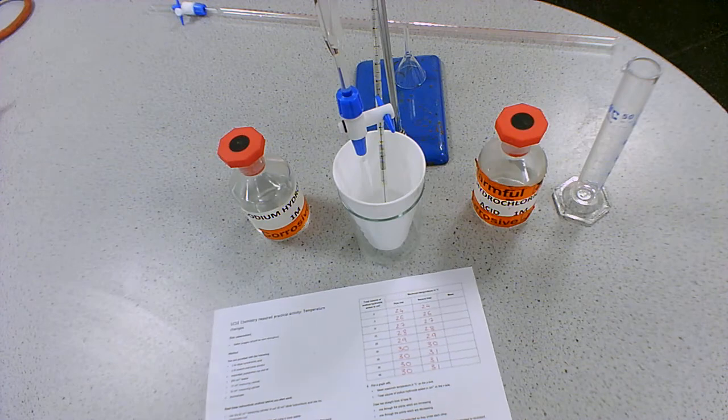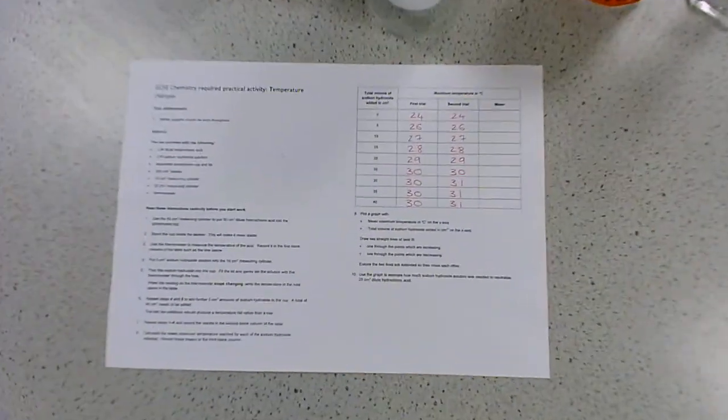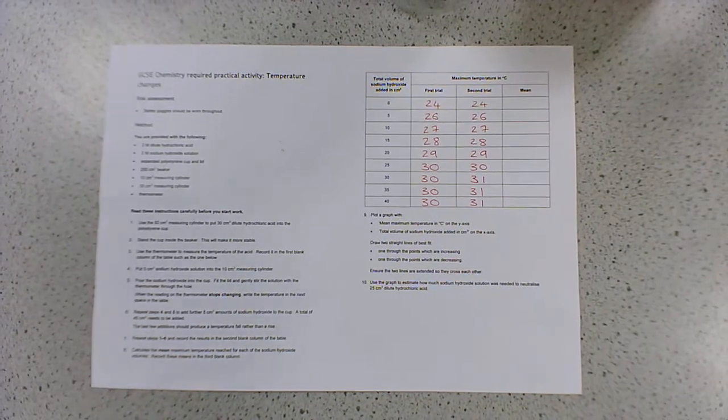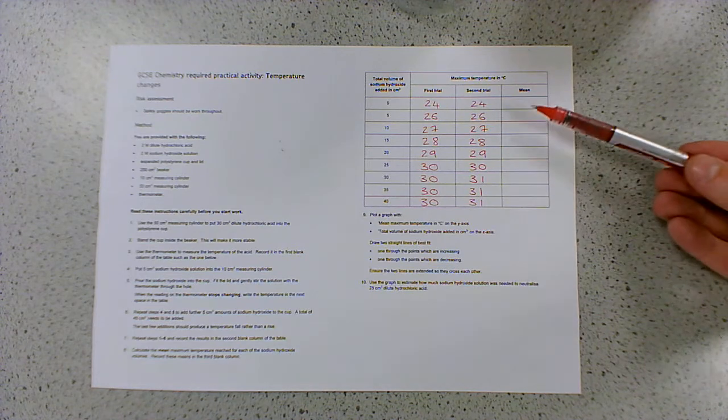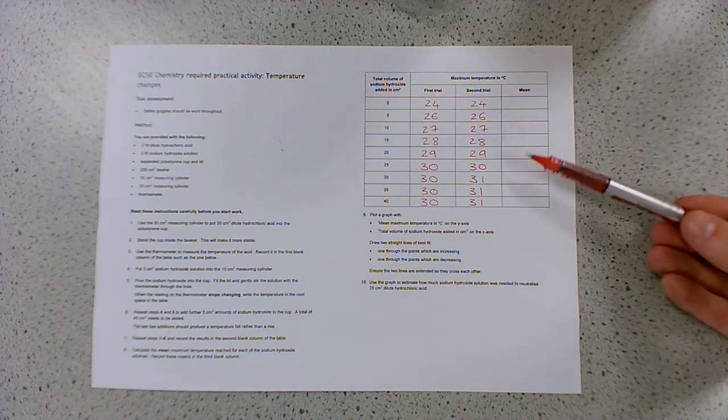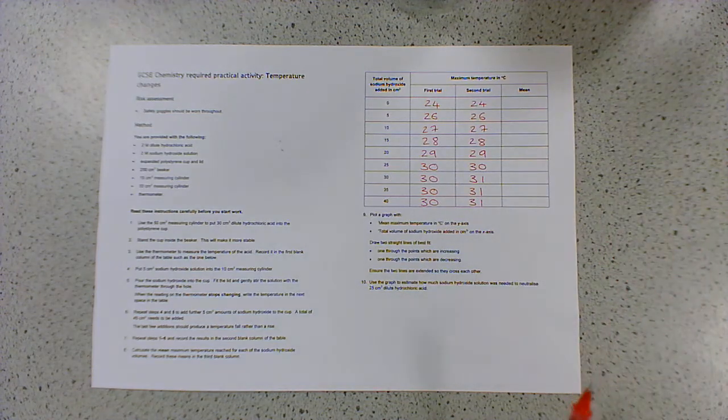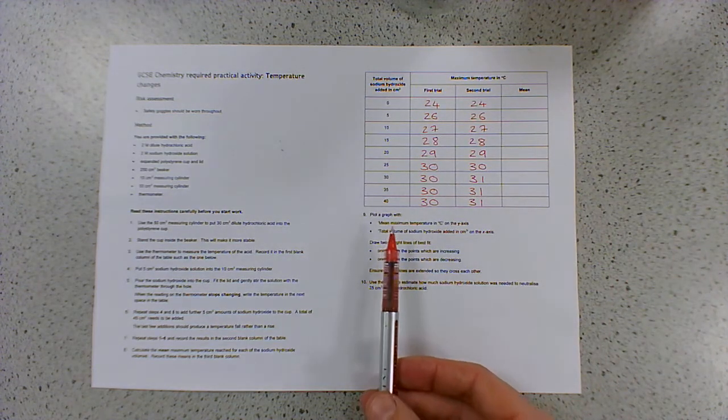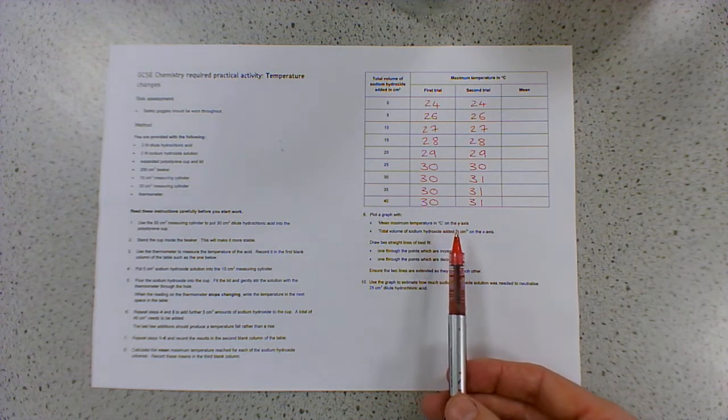So we've now got our results, and if I zoom in on those, OK, so what you're going to have to do is calculate the mean of those values, it's not going to be very difficult, certainly not for the first few, calculate the mean, and then plot a graph showing the mean temperature on the y-axis and the total volume of sodium hydroxide on the x-axis.